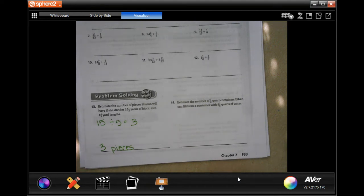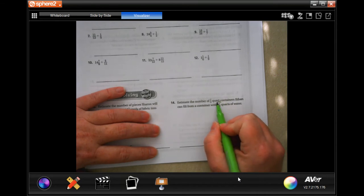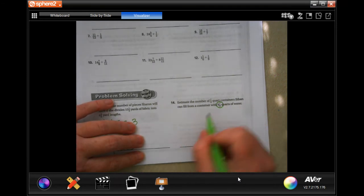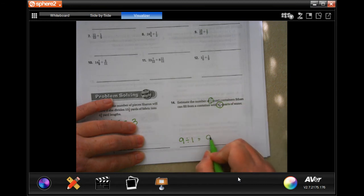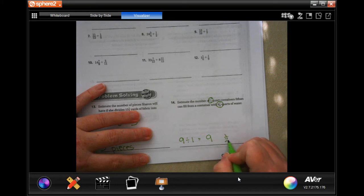Estimate the number of half quart containers Ethan can fill from a container. It is 8 and 7 eighths. Well, 8 and 7 eighths is what we're starting with. 7 is more than the 4 eighths. It would be half of 8, 7 eighths. So that's going to make that round up to 9. 1 half again rounds up to 1. So 9 half quart.